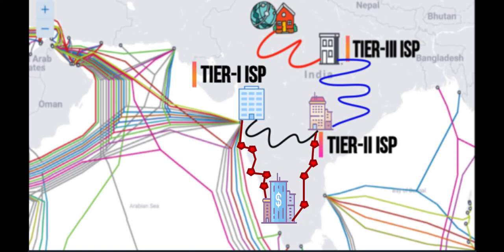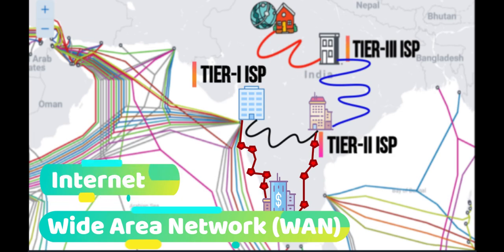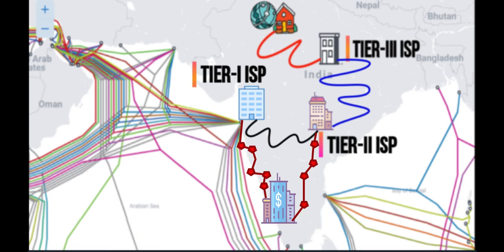The wide area network is when all ISPs around the globe come together and form interconnectivity — they basically create the wide area network. The wide area network is also called the internet. When we as users become part of this wide area network, we connect to the internet. Many web servers, file servers, and different types of servers like Google and Facebook servers are all connected to the wide area network and become part of the internet.